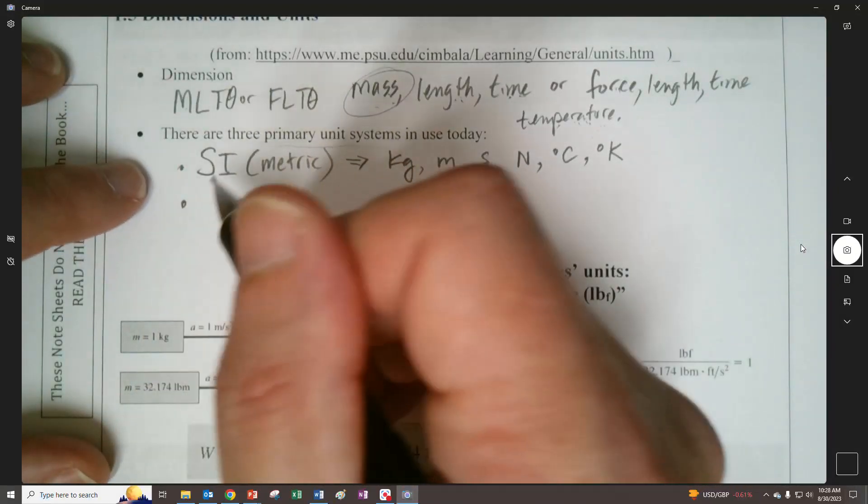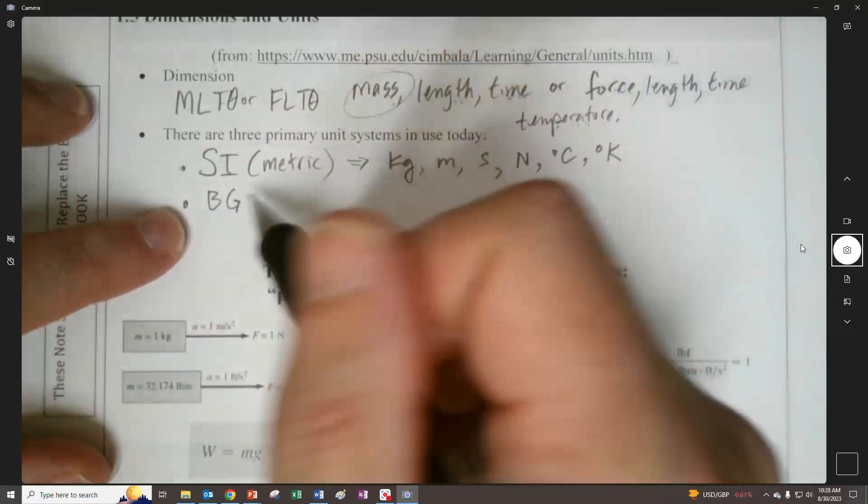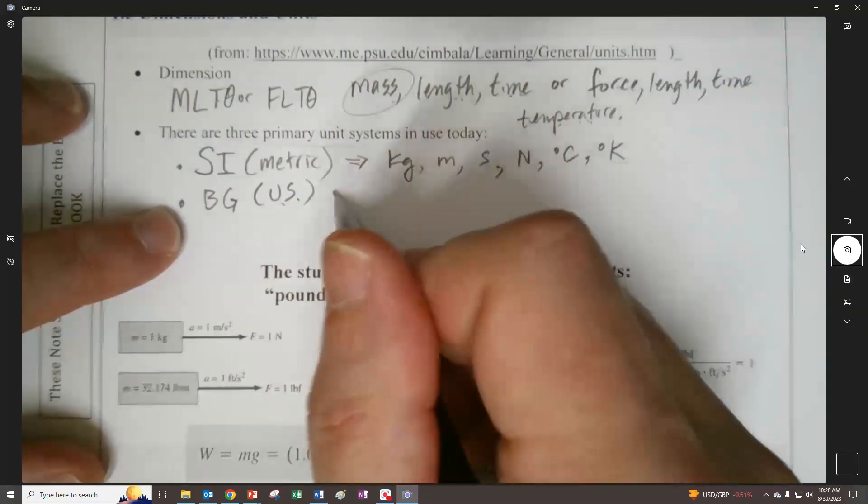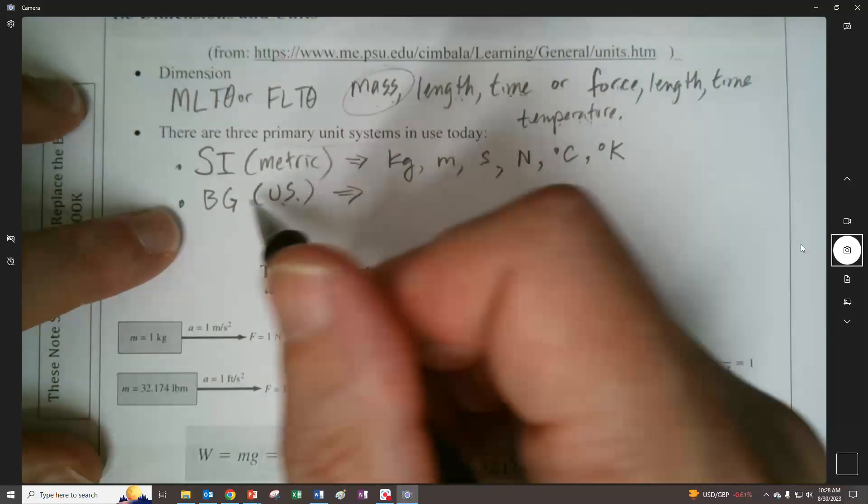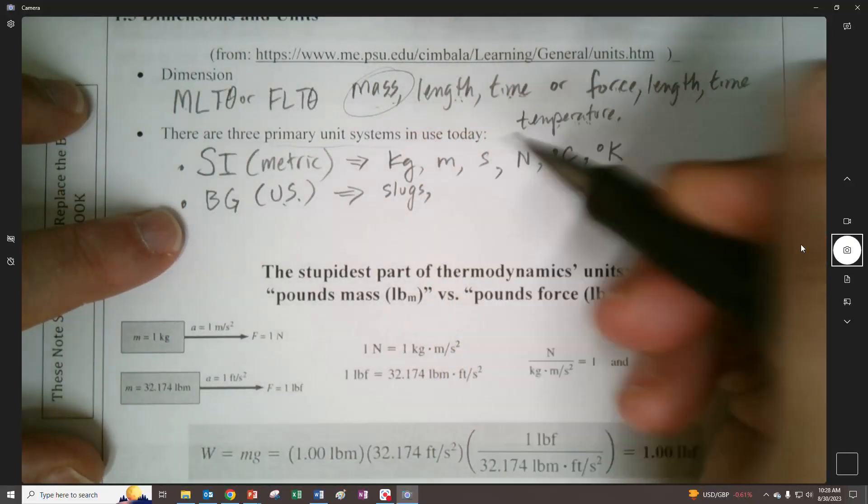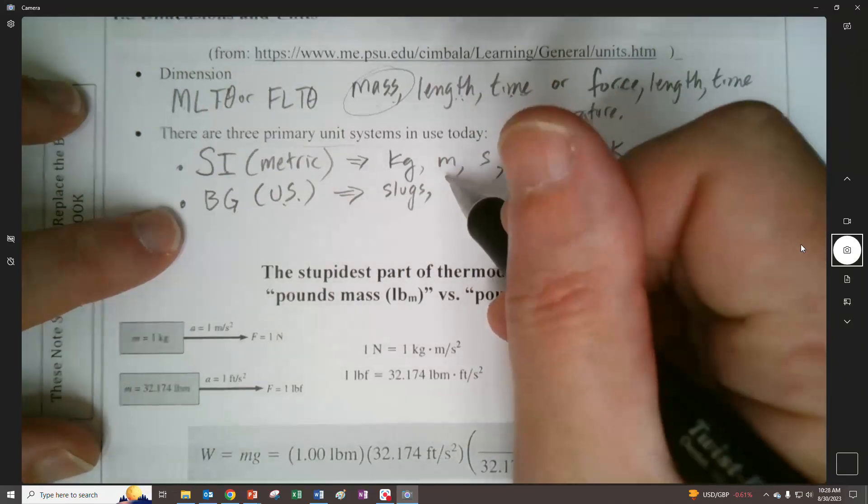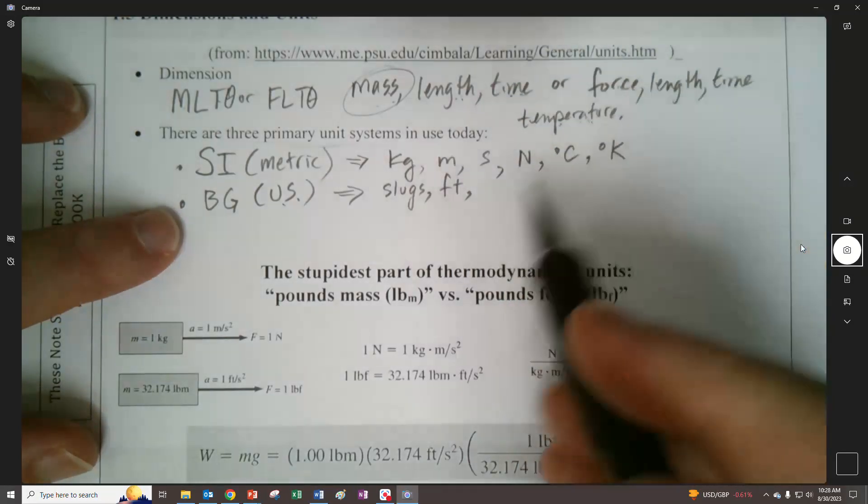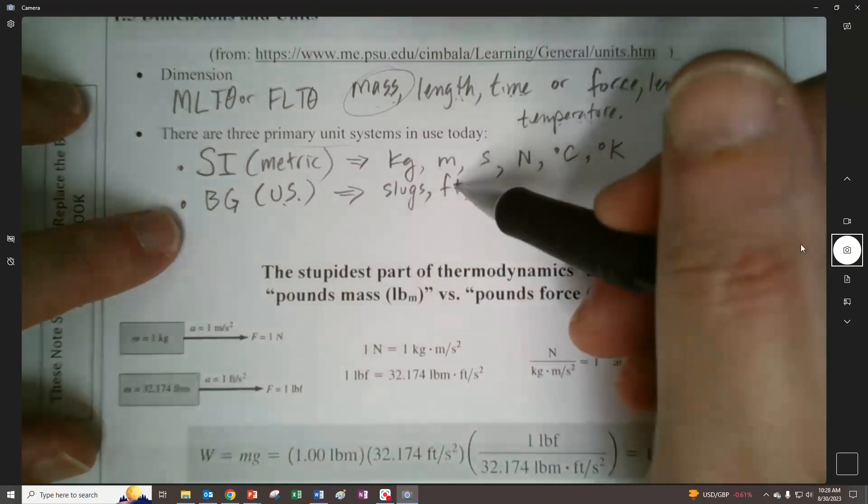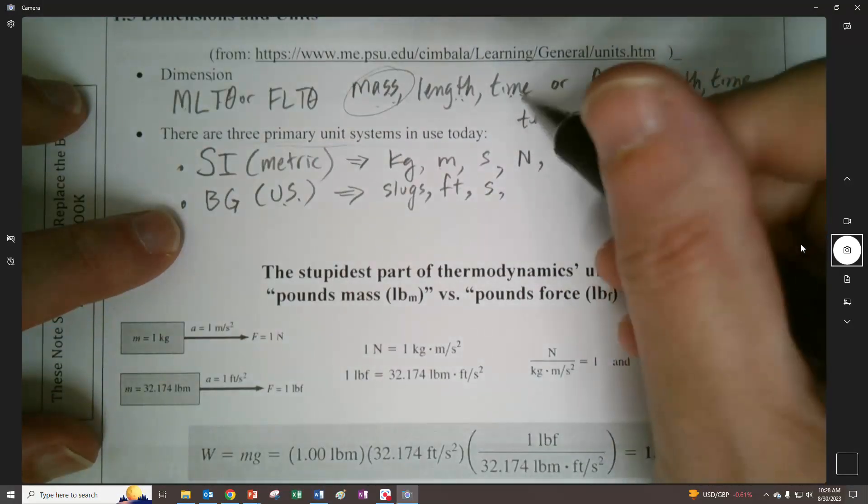We have another one. Because I teach dynamics, we call it British gravitational. Sometimes this is U.S. units. For the mass here, for the British gravitational, in dynamics class we use slugs. Because we're using slugs, slugs are based on feet. So instead of using inches, we use feet. This is what we usually use in British gravitational. And seconds, obviously, is what we have right in there.